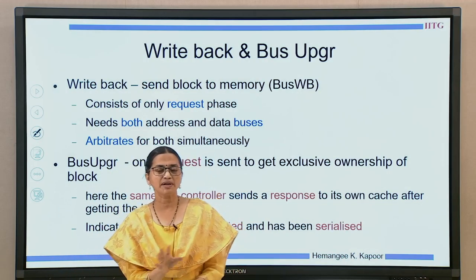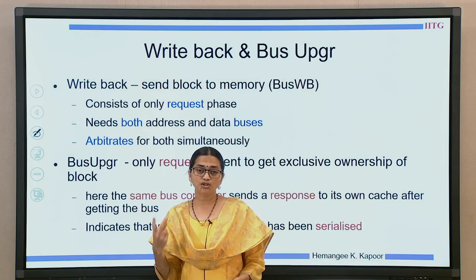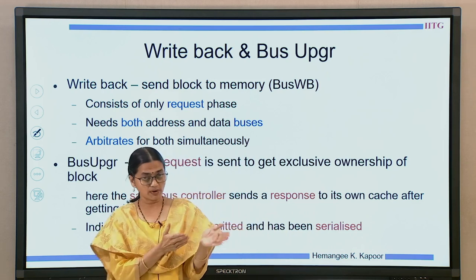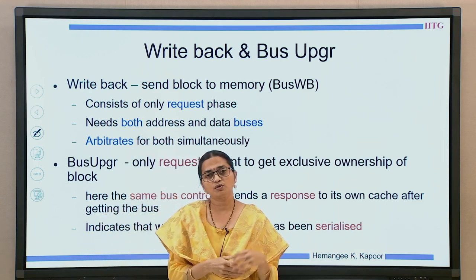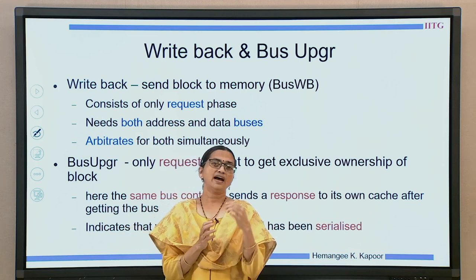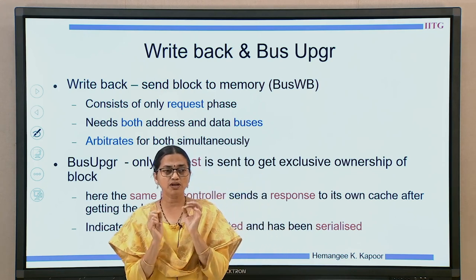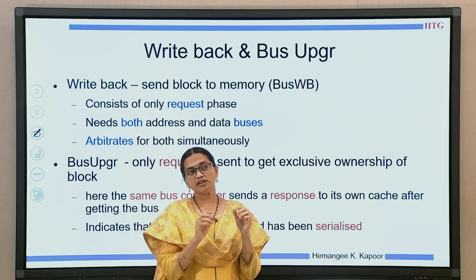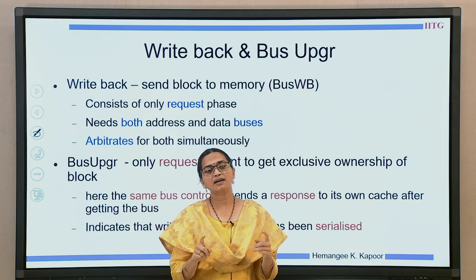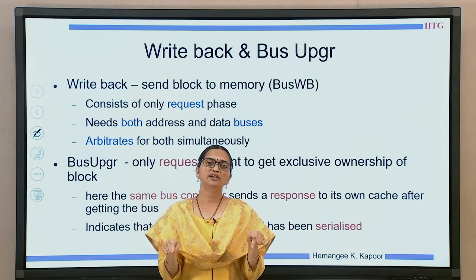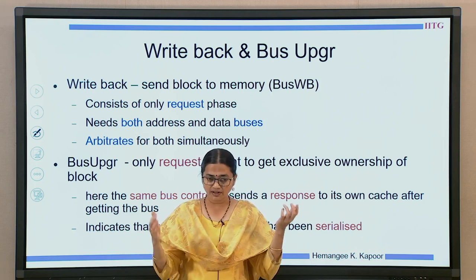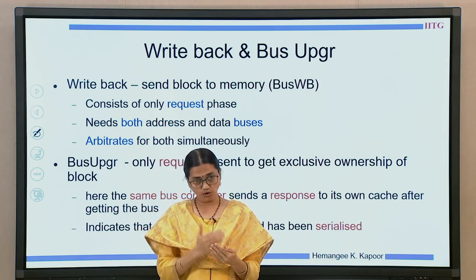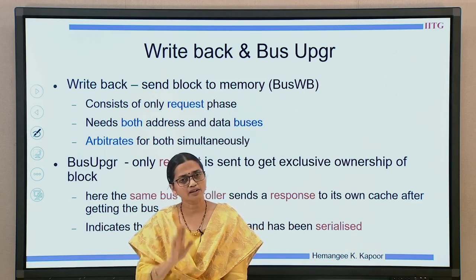We have done the basic read-write things. The other two things left are write-back and bus upgrade. When you do a write-back, the write-back block sends data as part of the request — there is no response. But the request phase only has access to the address bus, not the data bus; data bus access is only acquired during the data response phase. So in this case, the write-back has to arbitrate both buses together — the same processor arbitrates both buses. Once it gets both together, only then it starts the write-back; otherwise it does not send.